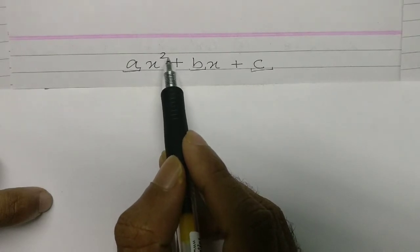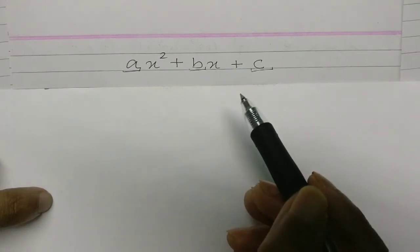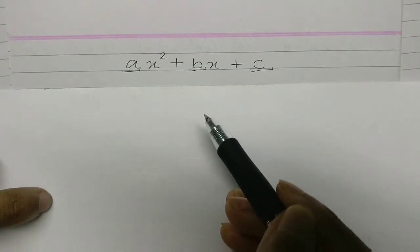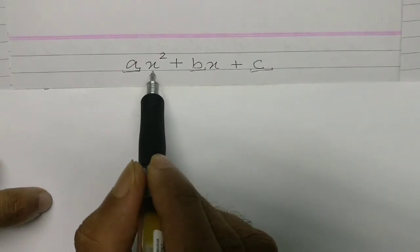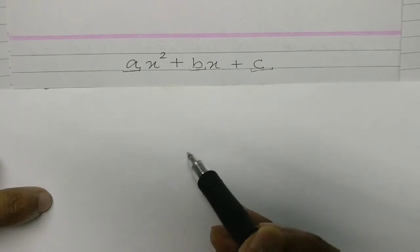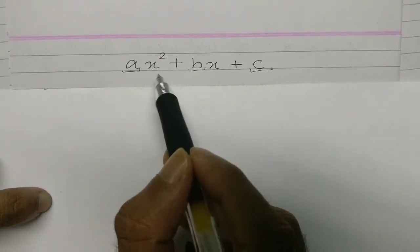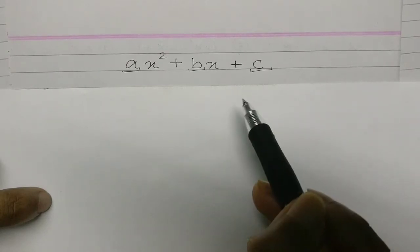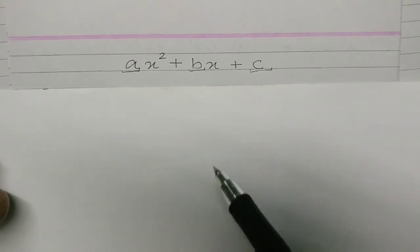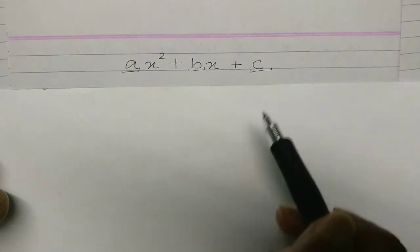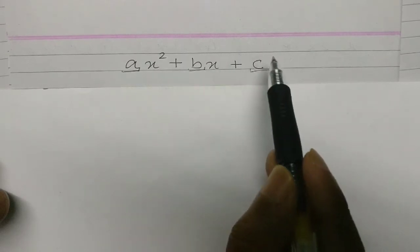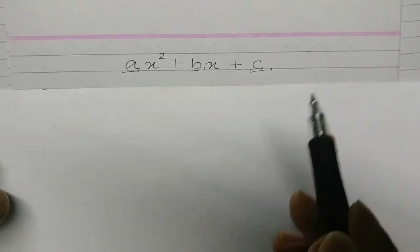C is called a constant. x² and x are the variables. 2 is called the degree of the polynomial. Now there is a relationship between the zeros of the polynomial. Zeros of the polynomial are nothing but the numbers which you substitute in the polynomial — after solving, your answer is zero. Those numbers which you substituted are called the zeros of the polynomial. If you haven't seen the previous video, I've put the link in the description box — do check it out.